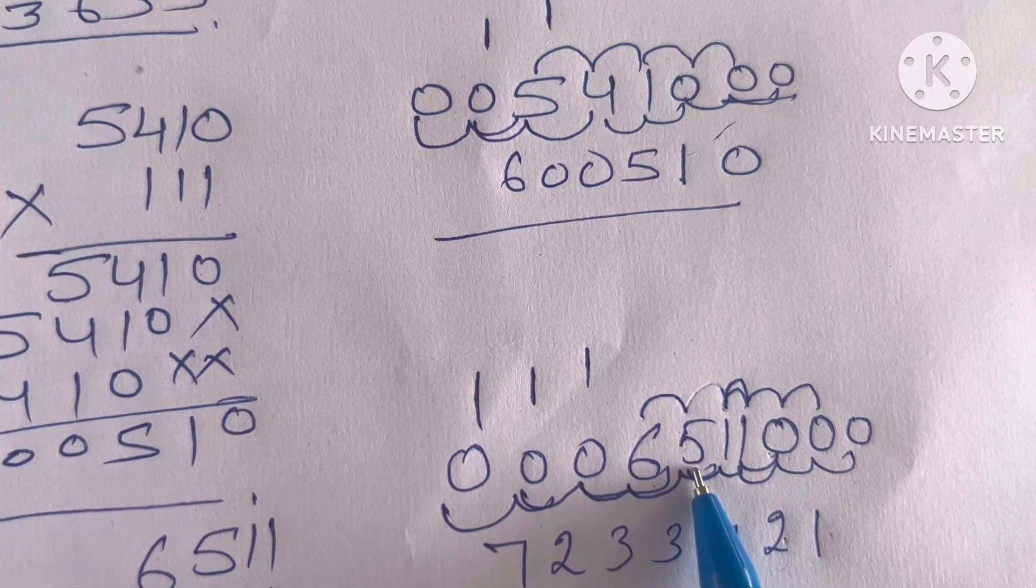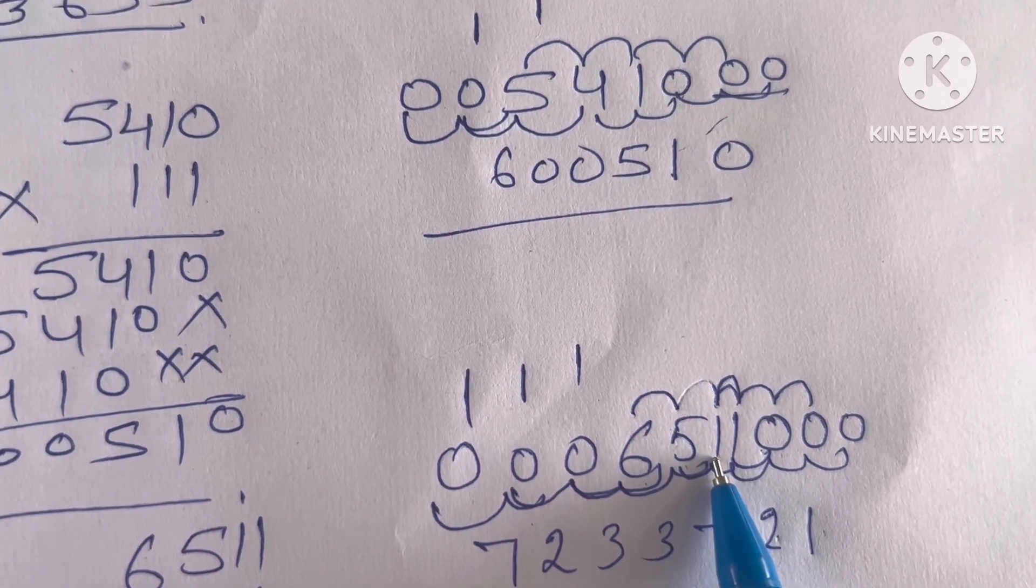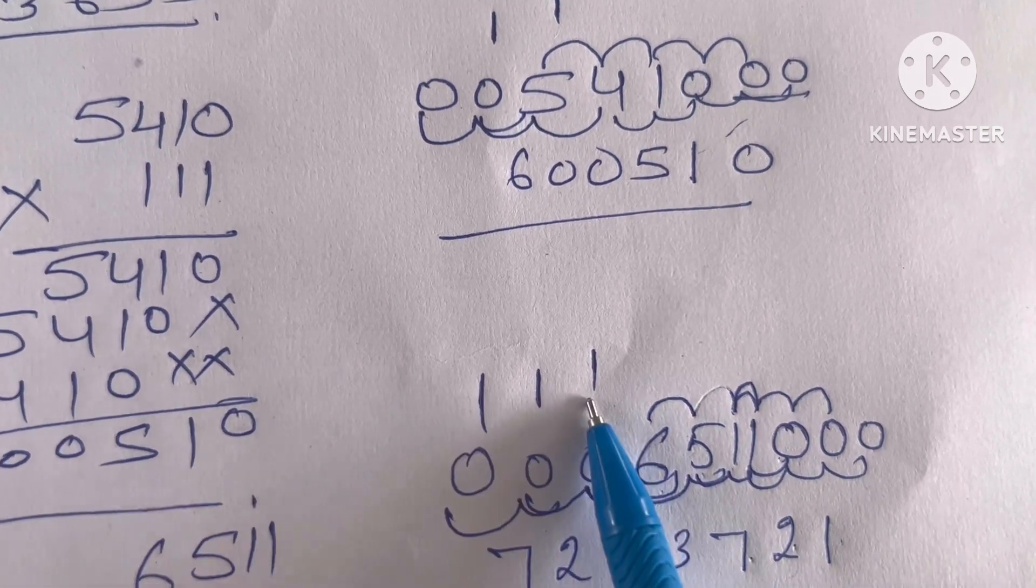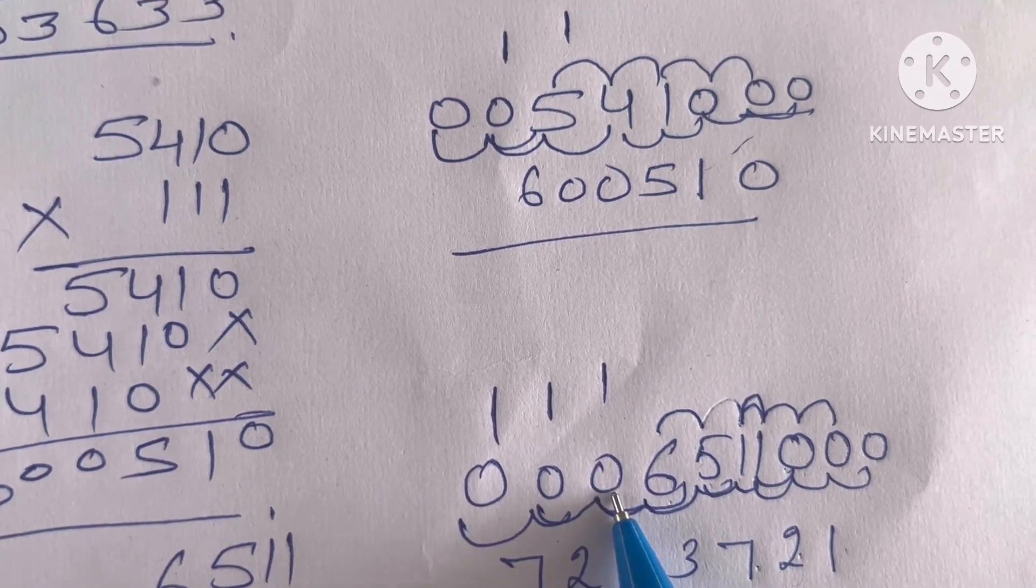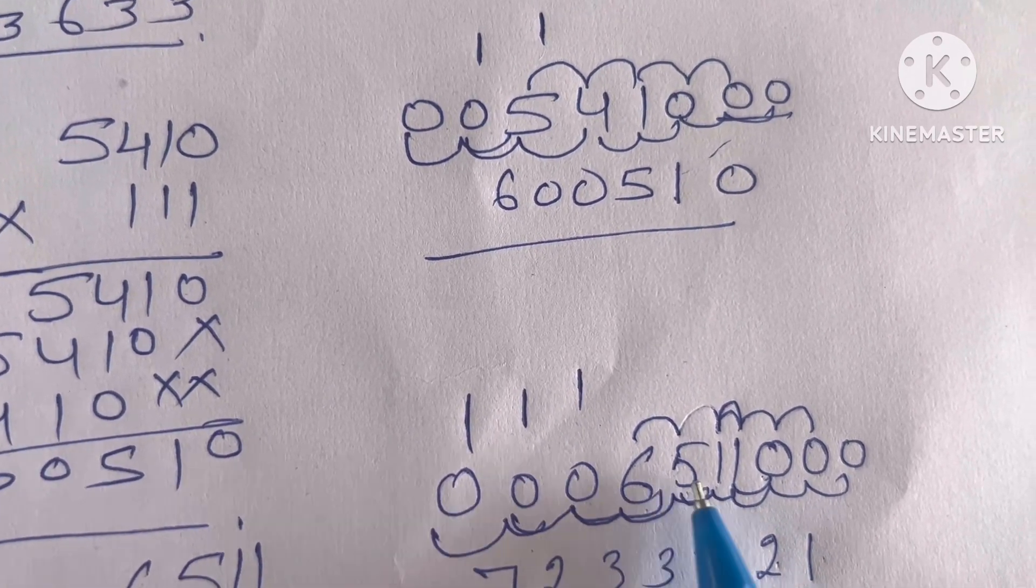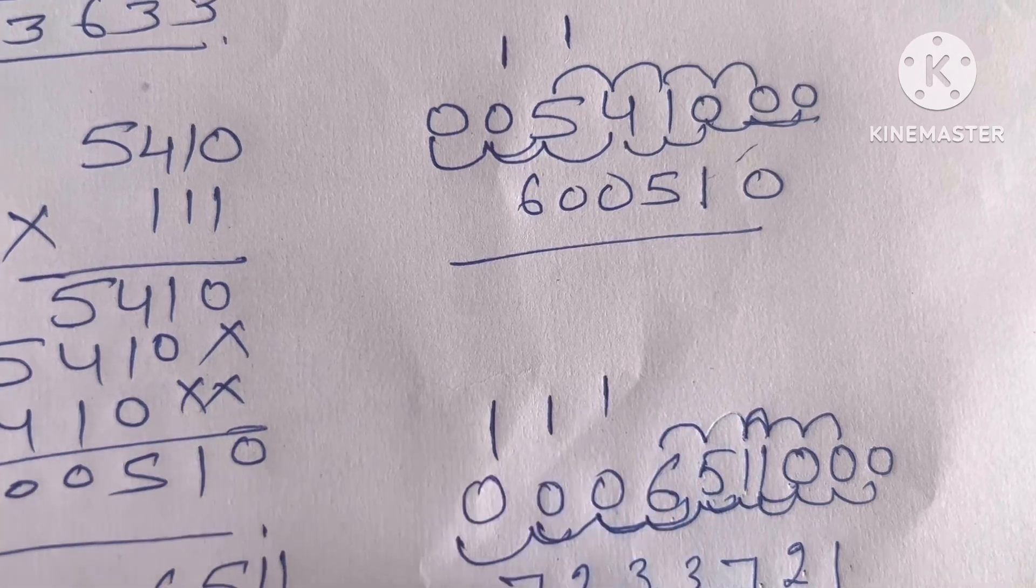Then next number. 6 plus 5, 11. 11 plus 1, 12. 12 plus 1, 13. 1 carry. 0 plus 6. 6 plus 5, 11. 11 plus 1, 12. 12 plus 1 carry, 13.